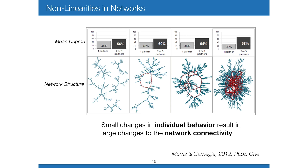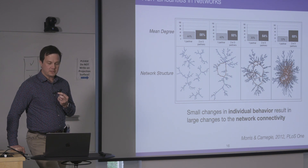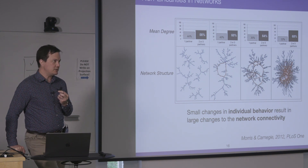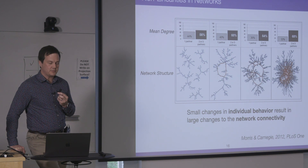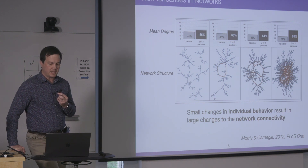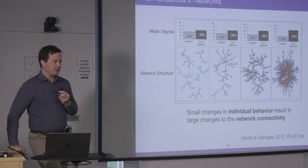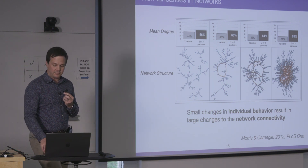The same type of non-linearities happen on networks. A paper from Martina Morris demonstrates that even small changes in mean degree — shifting people from one to multiple partners — has a dramatic impact on the overall connectivity of the network. You can imagine which network a particular virus would rather be flowing through from a pathogen perspective.